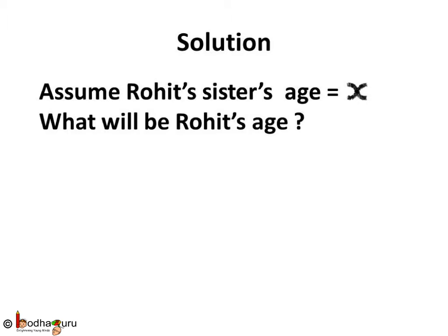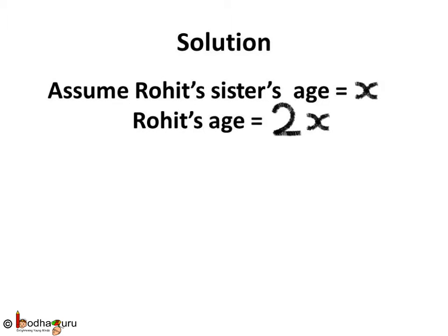Now what will be Rohit's age? Rohit's age is double that of his sister's. It means if his sister's age is x, then Rohit's age is double of x — that is, we multiply x by 2. So Rohit's age is equal to 2x, which is double of x.